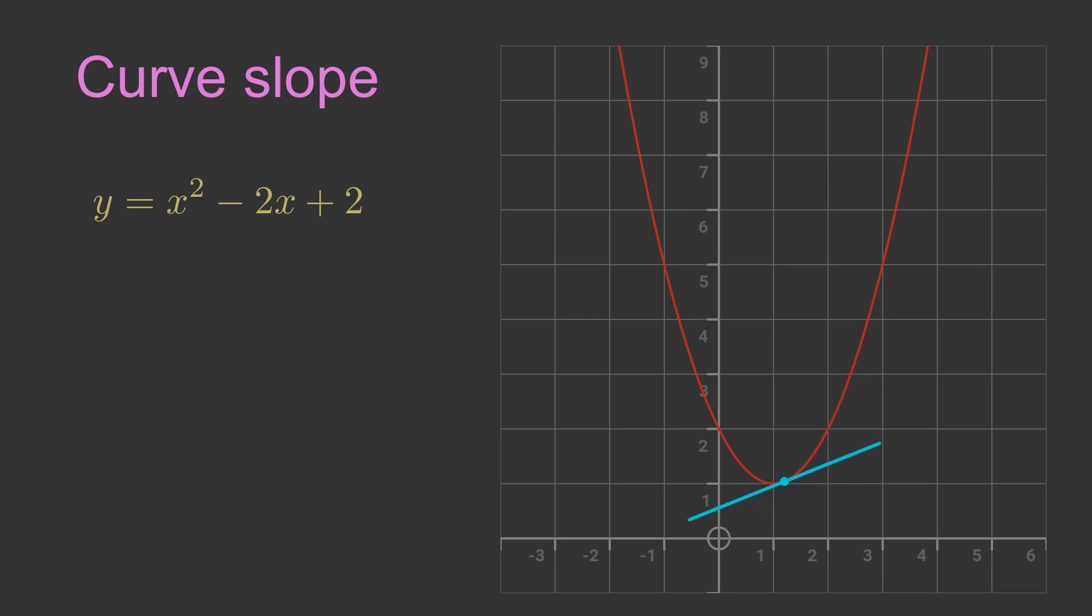If we draw the tangent at other points on the curve, we can see that the slope of the curve is different at different places along the curve.